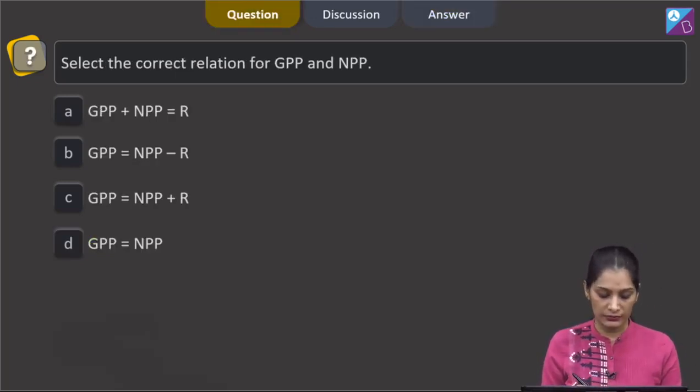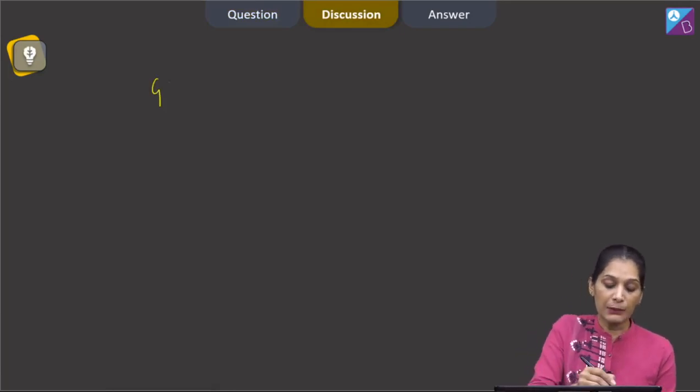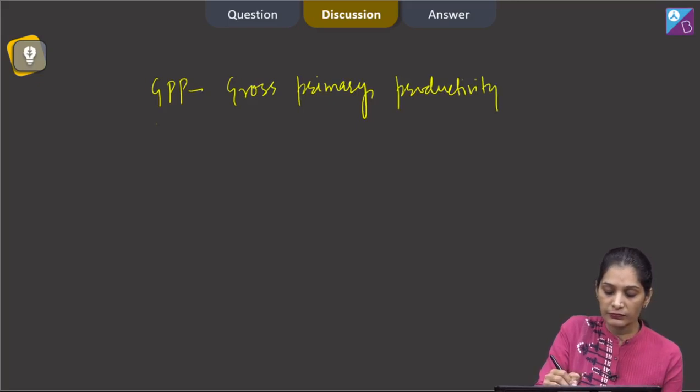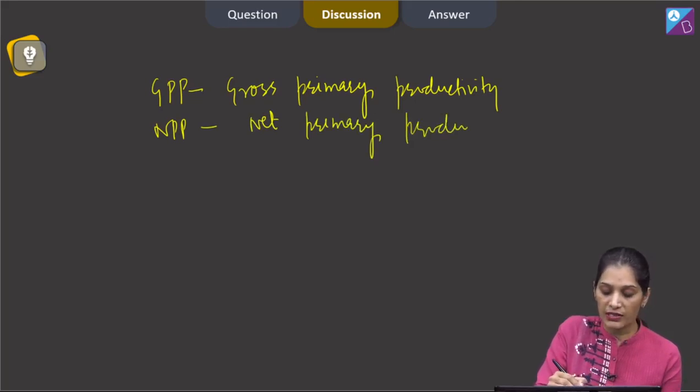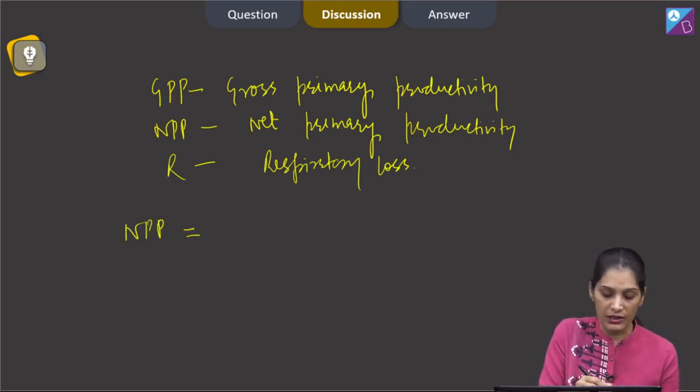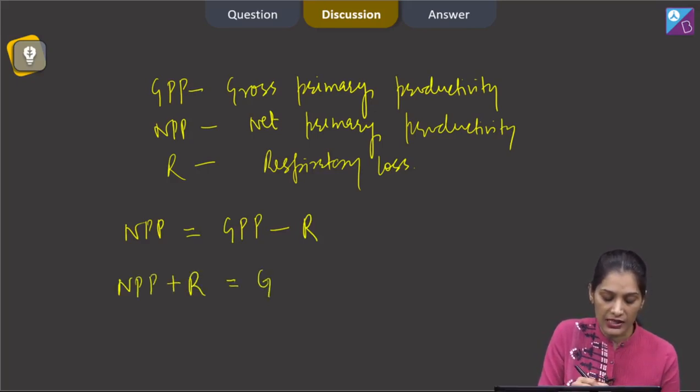Let's move to the next question. This question says select the correct relation for GPP and NPP. GPP stands for Gross Primary Productivity, NPP stands for Net Primary Productivity, and R here stands for Respiration or the Respiratory Loss. So we can say the NPP or the Net Primary Productivity is equal to GPP minus R. So you can say NPP plus R is equal to GPP.